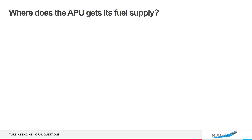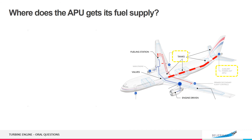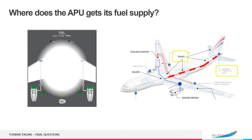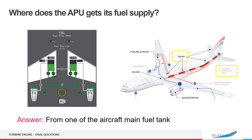Where does the APU get its fuel supply? From one of the aircraft's main fuel tanks.